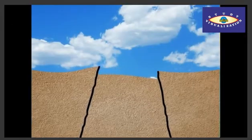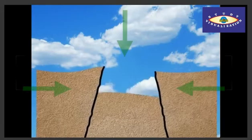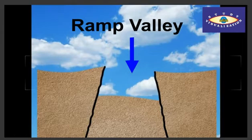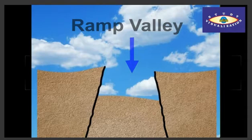The middle block of an opposite fault can move downwards and form a ramp valley. Notably, as we see in the case of a drift valley, expansion of the side blocks works, whereas in the case of a ramp valley, contraction of the side blocks works.